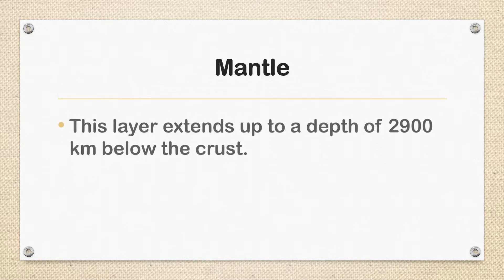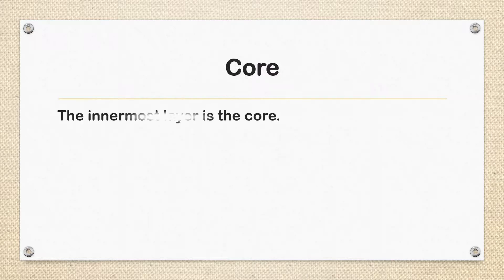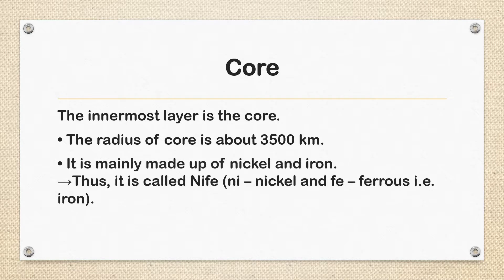Going towards the mantle — this layer extends up to a depth of 2900 km before the core. The innermost layer is the core. The radius of the core is about 3500 km. It is mainly made up of nickel and iron, thus it is called NiFe — Ni for Nickel and Fe (Ferrous) for iron.